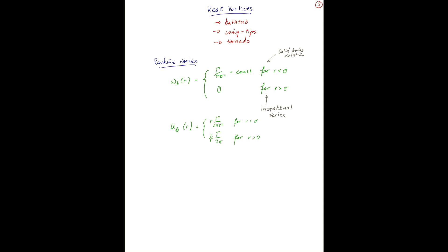So in this case, for the Rankine vortex, you have an abrupt transition between the two vortex types at r equals sigma.